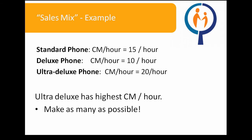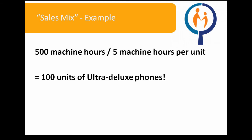At $20 per hour, the ultra-deluxe phone has the highest contribution margin per hour. We should therefore aim to make as many of those as possible. At 5 machine hours per ultra-deluxe phone and a capacity of 500 machine hours, we are able to produce 100 units of ultra-deluxe phones. Therefore, 100 units of ultra-deluxe phones is our optimal production plan given unlimited demand.